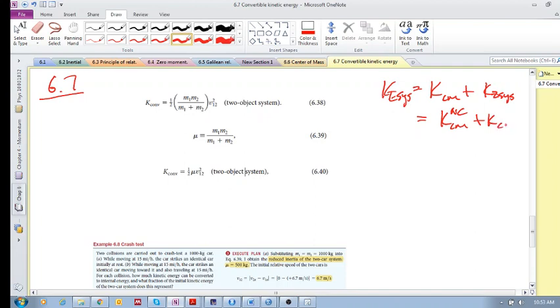We saw that this kinetic energy is convertible. What do we mean by convertible and non-convertible? It means that this kinetic energy cannot be converted into internal energy in an isolated system, and this kinetic energy can be converted into internal energy in an isolated system.